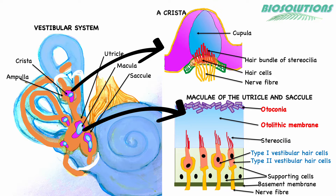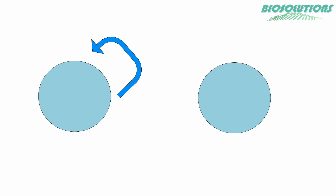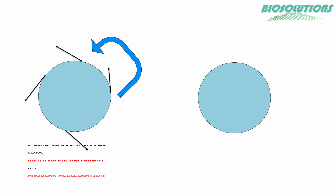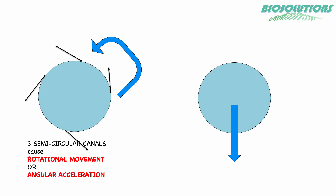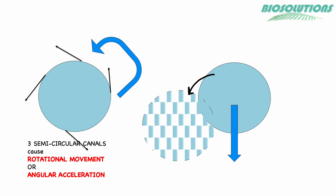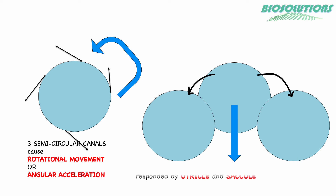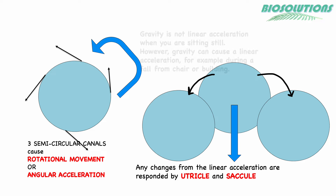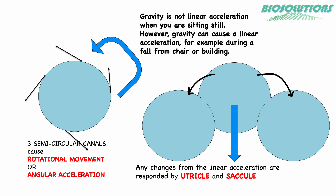The three semicircular canals respond to angular acceleration or rotational movements in three-dimensional space, each corresponding to a specific direction of head movement. Whereas changes in the position of the head with respect to gravity, or linear acceleration, are taken care of by the utricle and saccule in the vestibule.